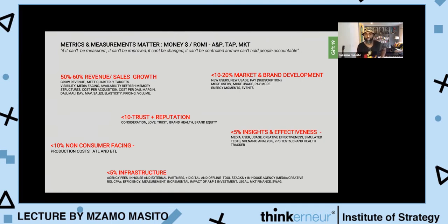Then there must be a chunk that is just about experimentation and play money. Then a chunk for infrastructure—agency fees, in-house partners, digital stacks and tools. All of that—the swag that you give to others, legal, all of that. So that's how I normally think about how you split your advertising and promotion spend.